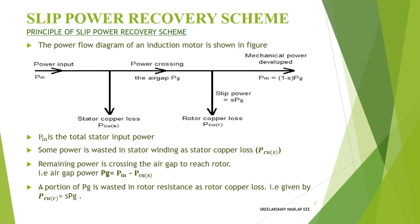Looking at the power flow diagram: the stator side receives the power input, and stator copper losses occur in the stator winding. Then we go to the air gap. Power crossing the air gap is called PG. In the rotor, the rotor copper loss occurs. The air gap power minus rotor copper loss gives the output. The rotor I²R loss represents the slip power that is wasted, denoted as S·PG.